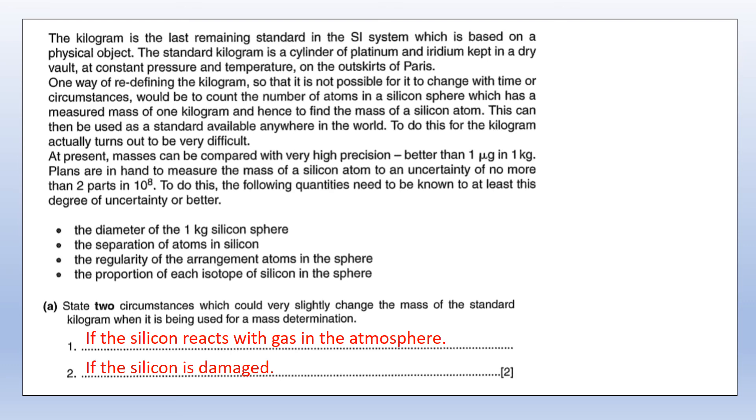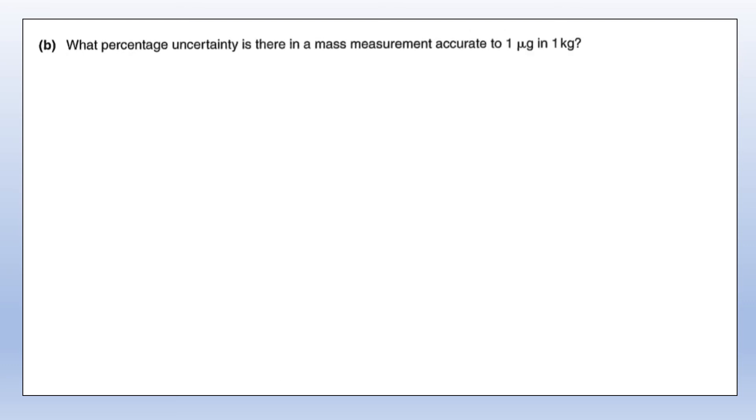What percentage uncertainty is there in a mass measurement accurate to one microgram in one kilogram? Percentage uncertainty is uncertainty divided by value times 100%. The uncertainty is one microgram, so micro is 10⁻⁶, gram is 10⁻³ kilograms, therefore the uncertainty would be 1 × 10⁻⁷ percent.